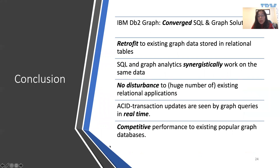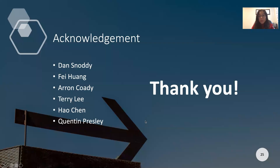To conclude, I've introduced IBM DB2 Graph. It is a converged SQL and graph solution that can retrofit to existing graph data stored in relational databases. SQL and graph can work synergistically on the same data with no disturbance to existing relational applications, and transactional updates from the SQL side are reflected in graph queries in real time. Performance of DB2 Graph is very competitive with popular graph databases. Thank you.